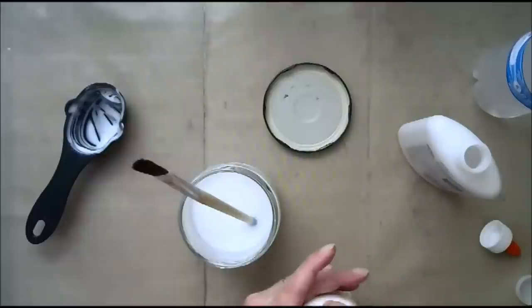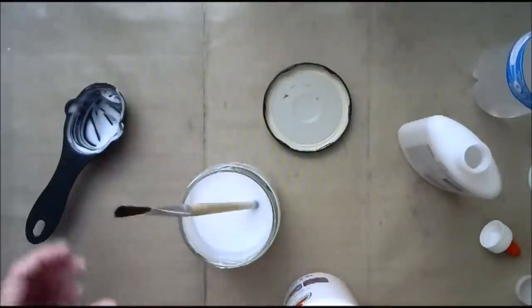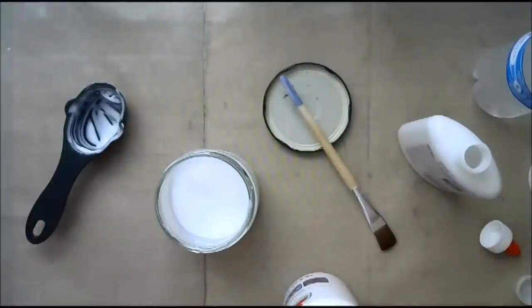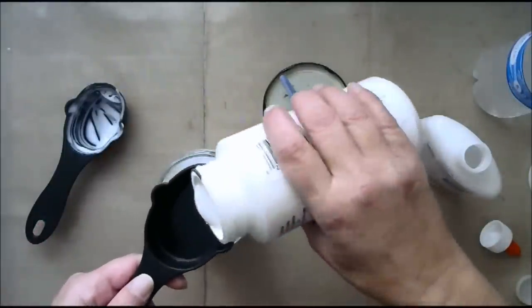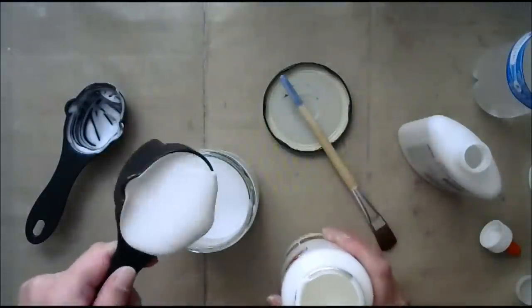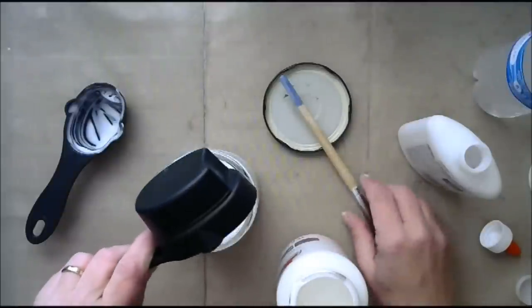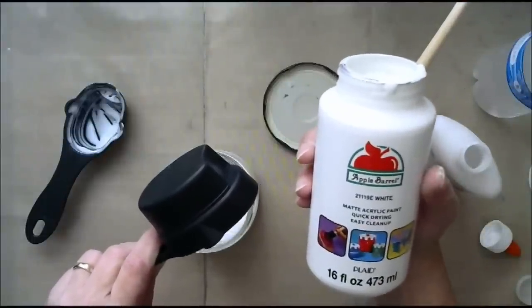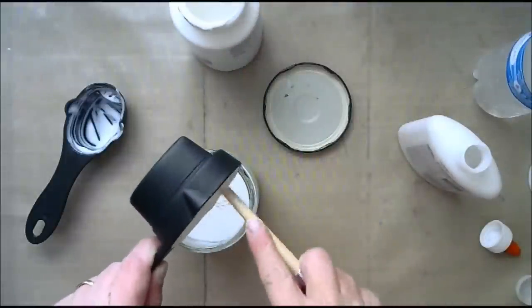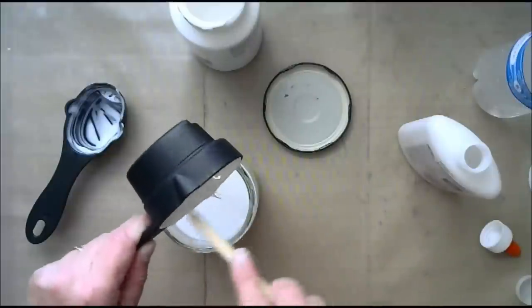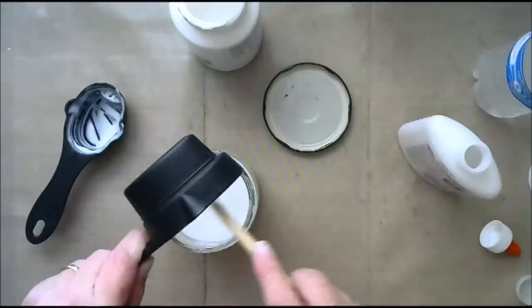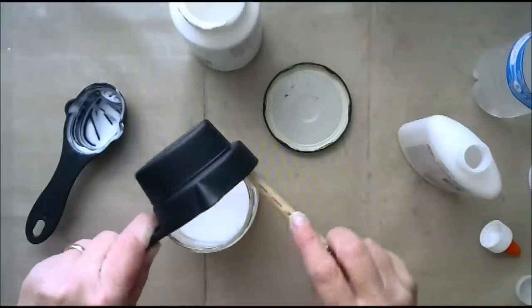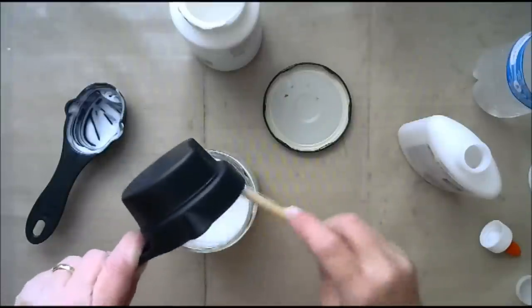Again, that was a quarter cup of water and a quarter cup of glue, and then mixing it up real good here. You want to make sure that it's all well and mixed. Now I'm going to add my half cup of white paint. Here's a half cup of white paint. And all this is, is the Walmart brand of white acrylic paint, Crafter's paint. I don't use my good paint on this.